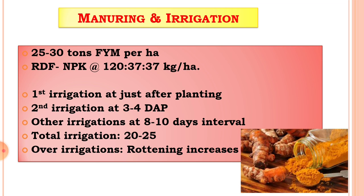For the irrigation requirement of turmeric crop: first light irrigation is given either before or after planting. The second light irrigation is given three to four days after planting. Other irrigations are given at eight to ten days interval.